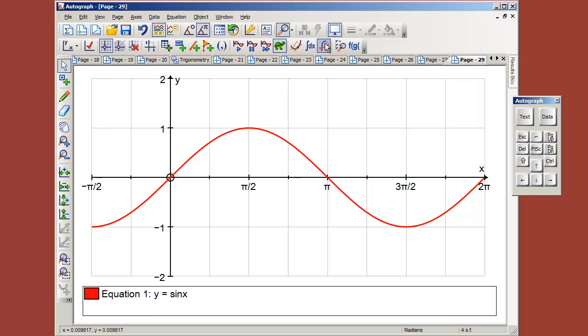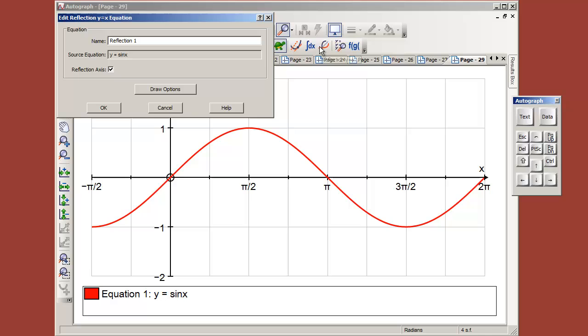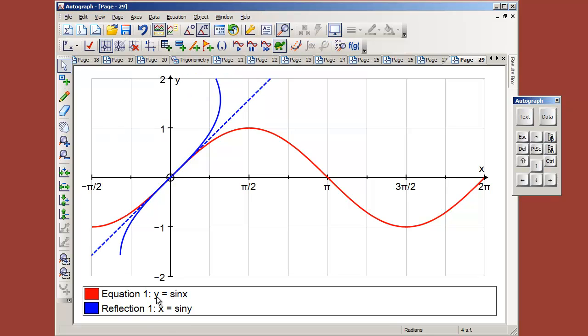Now, there is actually a function here to reflect in the line y equals x, which, if it is going to have an inverse, then that would be a good starting point. So we'll try that, see what happens. So that's going to simply swap over x and y, so what was y equals sine x is now x equals sine y.